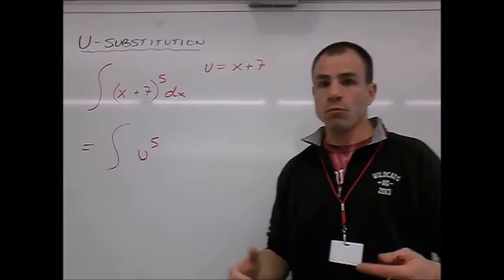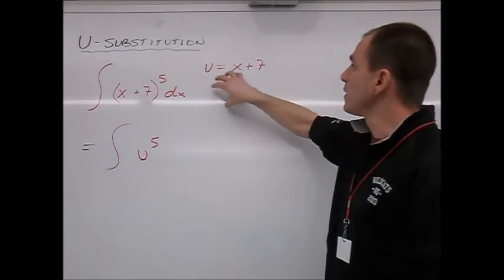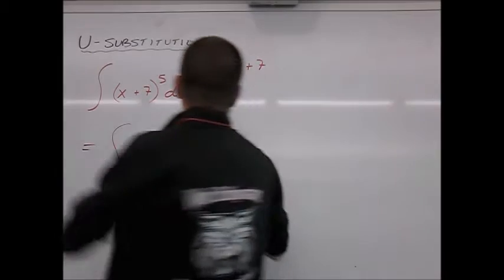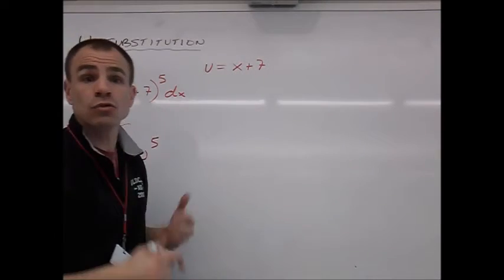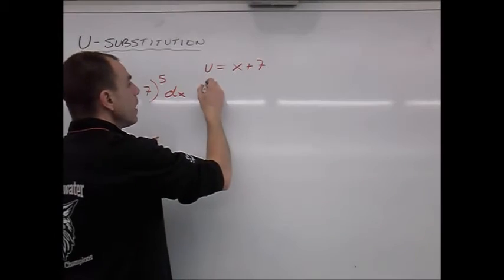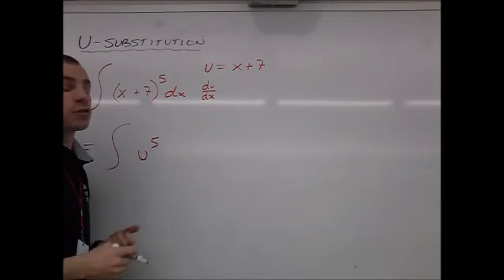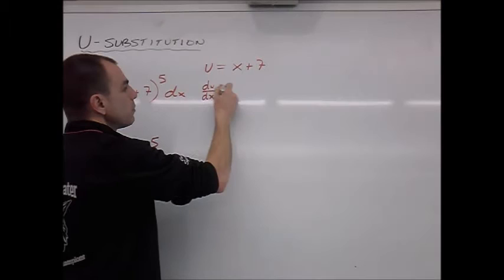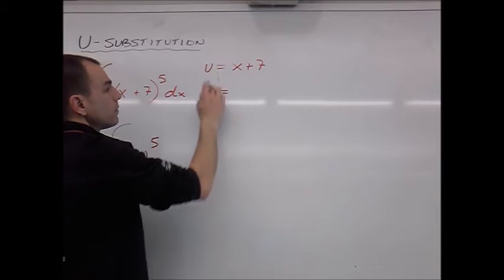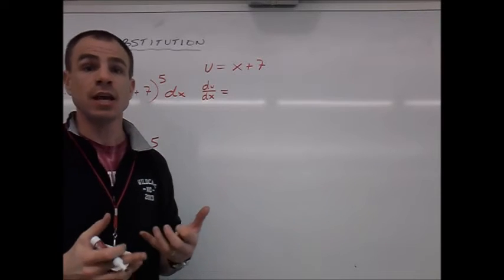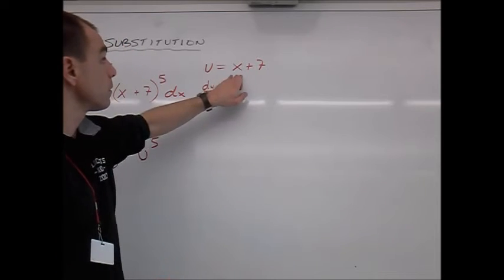What's du? We can actually figure out du based off of the connection we made between u and x. Because we have an equation here, and we can derive this equation. We can find the derivative of u with respect to x. The derivative of u just means that we take the derivative. The u's derivative is du dx. And what is the derivative of x plus 7? That's a nice, easy derivative for us to take.